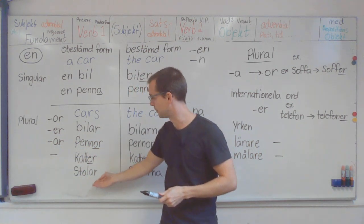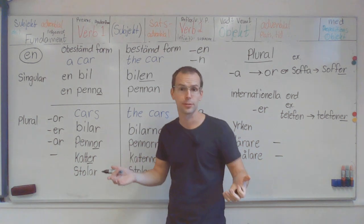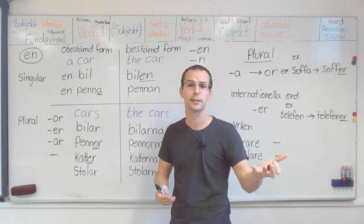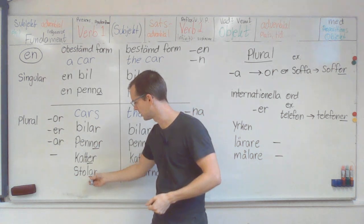Which has er. And one of the most common is ar. For example, stolar, chairs. En stol. A chair. Stolar. Chairs. So you have ar.